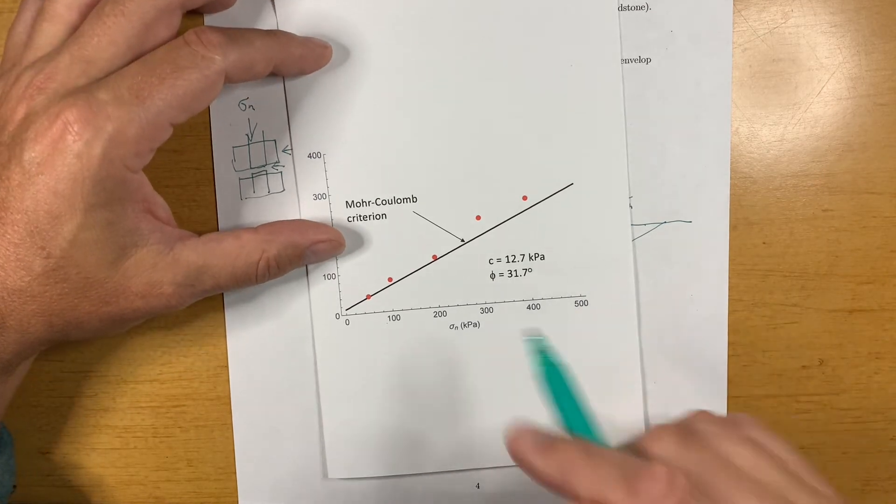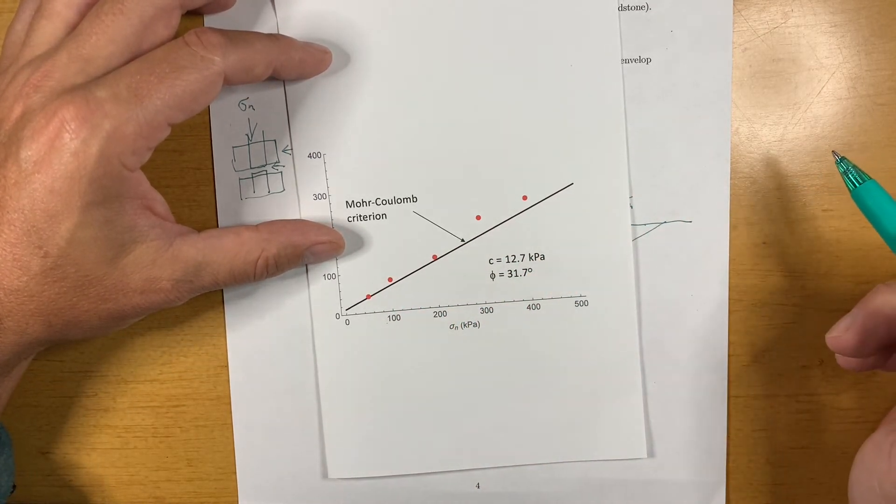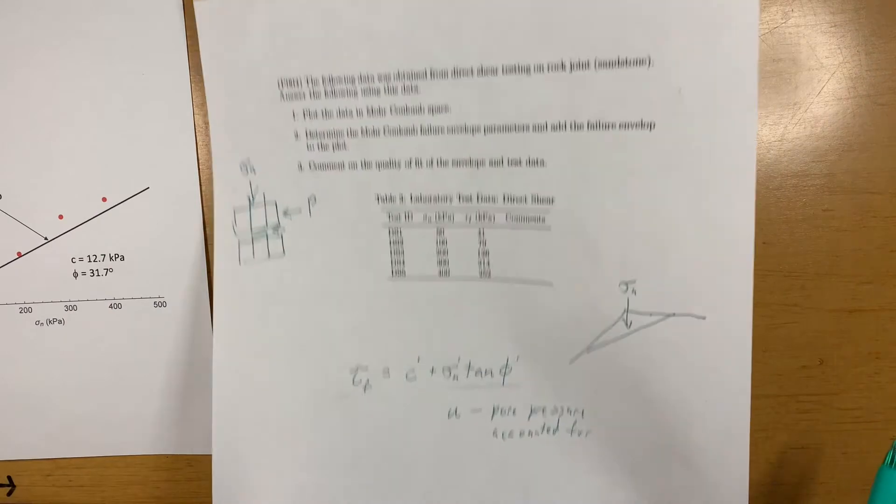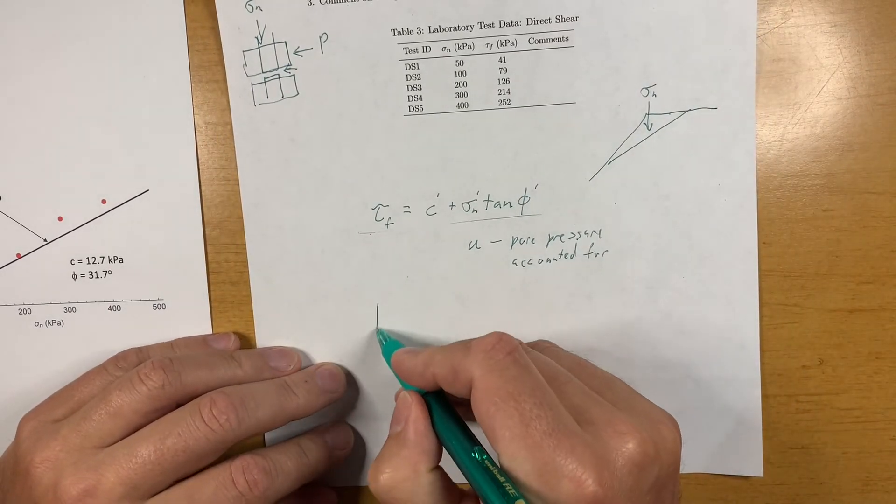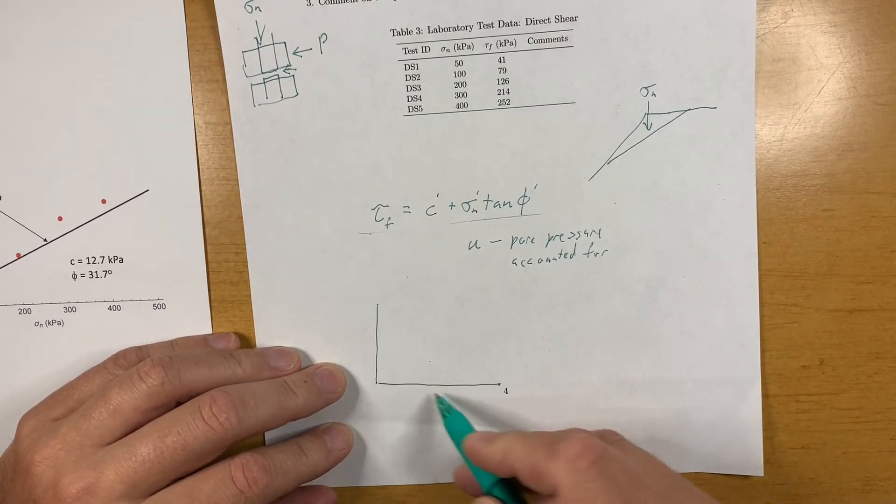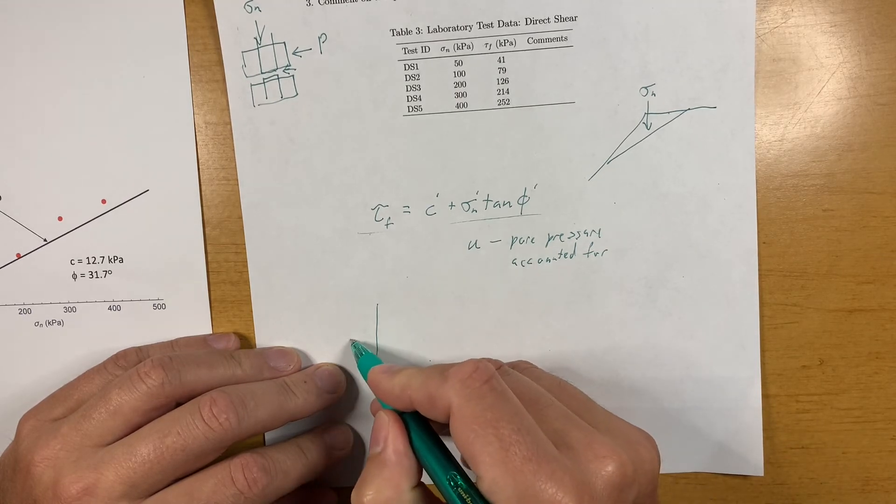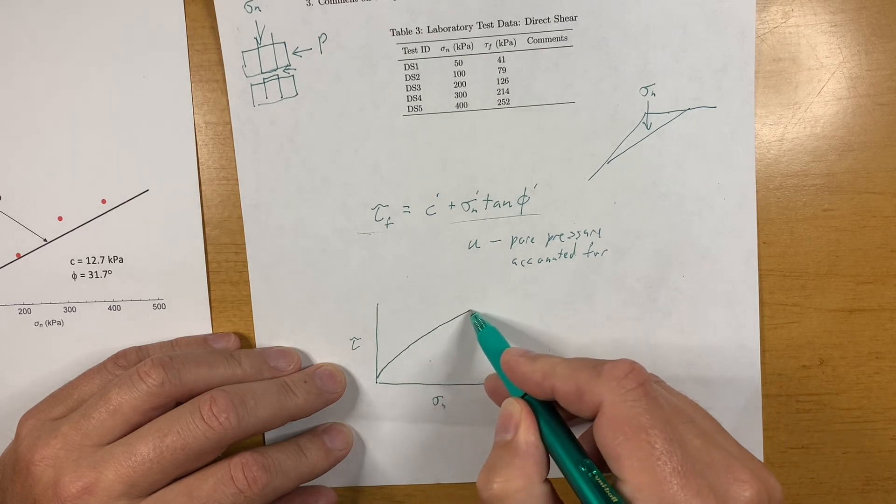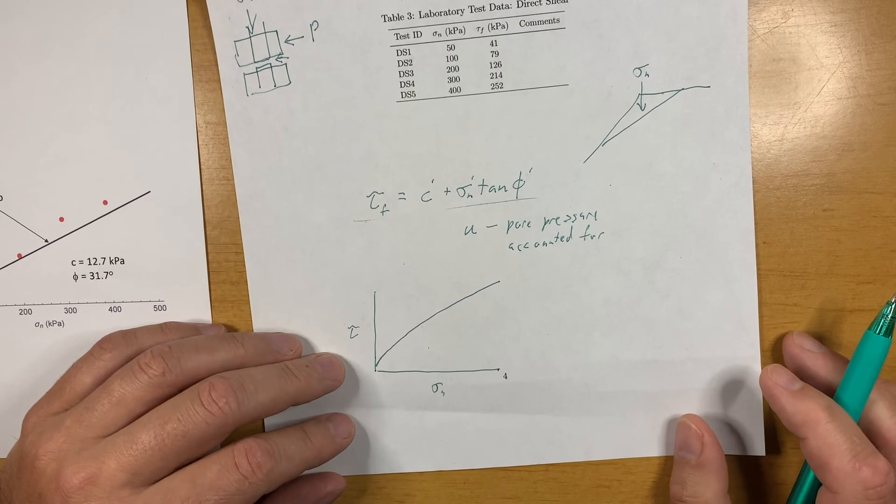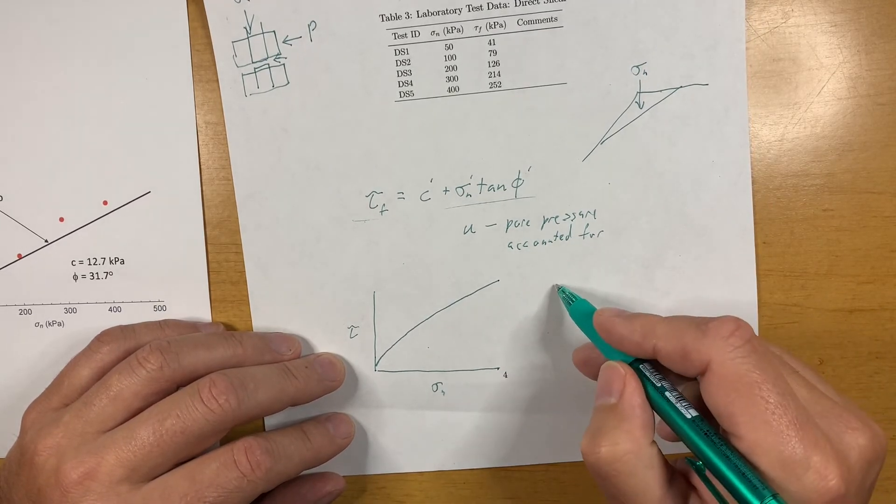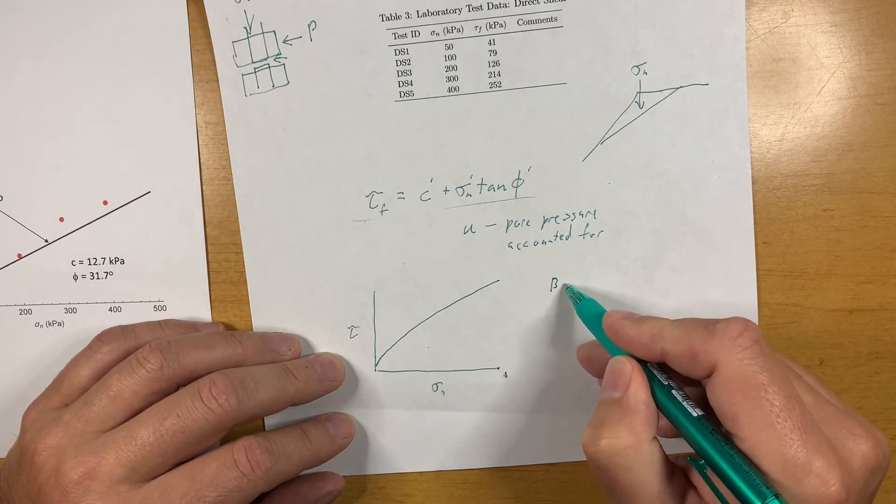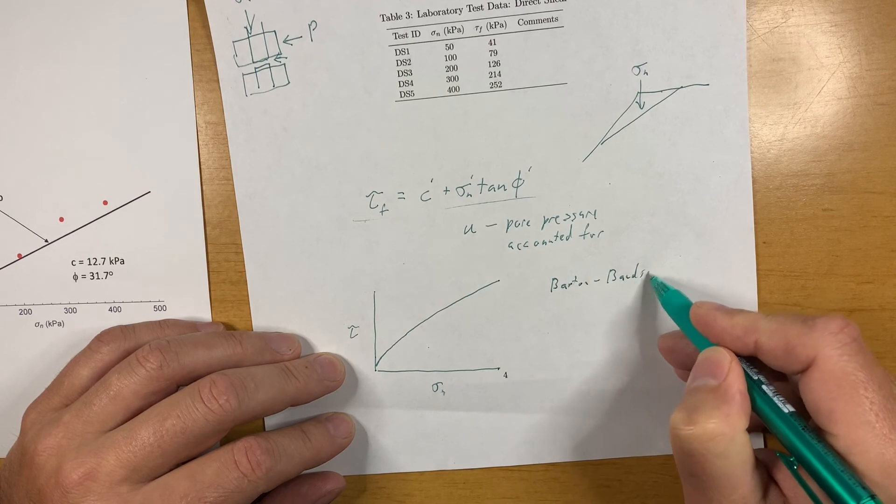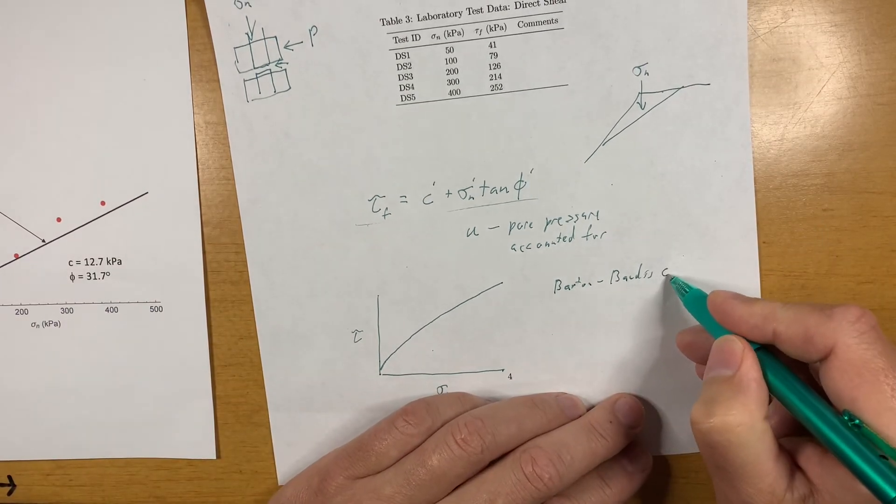Now, sometimes the data points will imply something maybe not so linear. They might imply something more nonlinear. And really, for the most part, it's well known that a nonlinear failure envelope seems to be most common with rock joints.